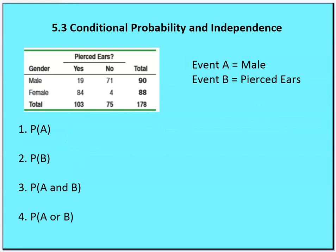Let's look at a table from a survey of male and female students and whether or not they had pierced ears. Event A is being male and event B is having pierced ears. We want to find the probability of A, the probability of B, the probability of A and B happening together, and the probability of A or B happening.